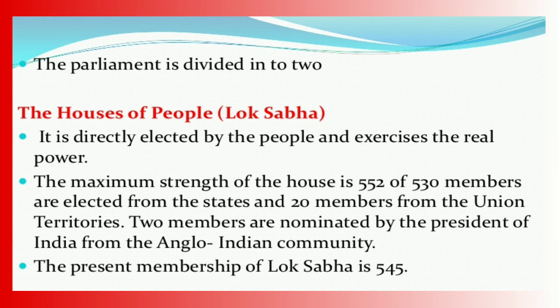Parliament is divided into two parts or two houses: Lok Sabha and Rajya Sabha. First, the House of People — Lok Sabha — is directly elected by the people and exercises real power. The maximum strength of the house is 552; 530 members are elected from the states and 20 from the Union Territories. Two members are nominated by the President from the Anglo-Indian community. The present membership of Lok Sabha is 545.